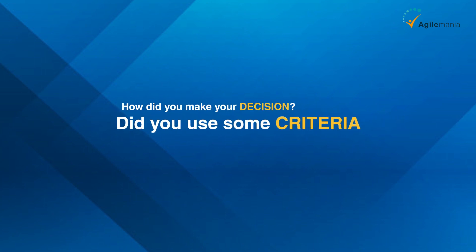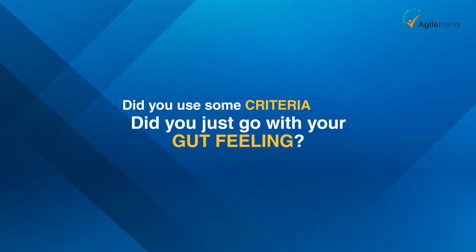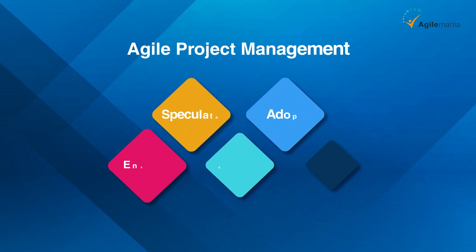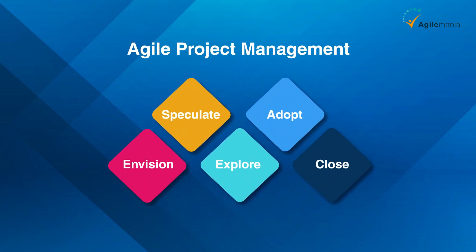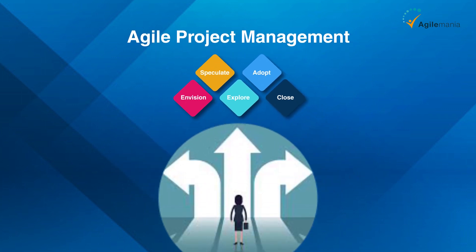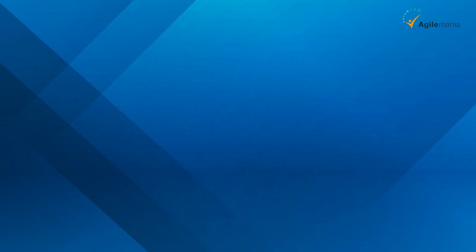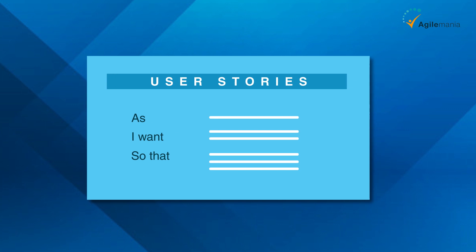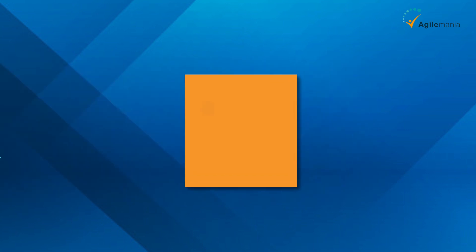Did you use some criteria, or did you just go with your gut feeling? Well, in agile project management we often face similar dilemmas when we have to estimate the size and importance of user stories in our product backlog. User stories are short descriptions of features or functionalities that we want to deliver to our customers.